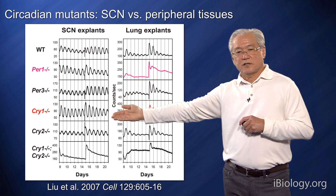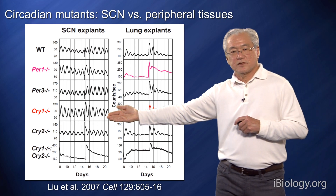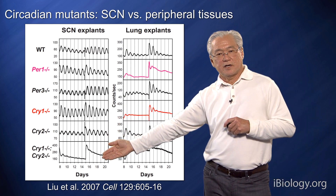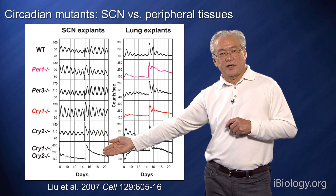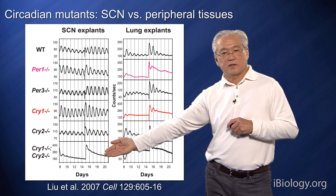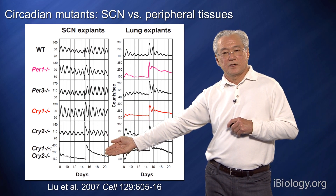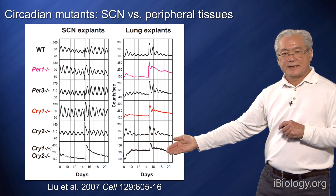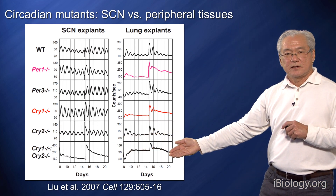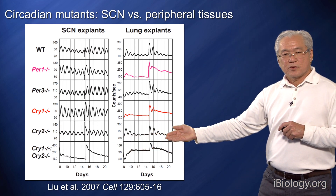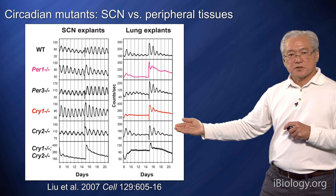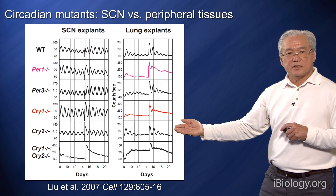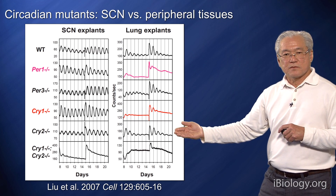In the suprachiasmatic nucleus, we have to do the double knockout — as we did for behavior for cry1 and cry2. This of course works in the lung as well, but in peripheral tissues we see a clear difference.